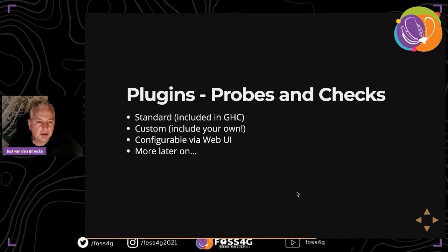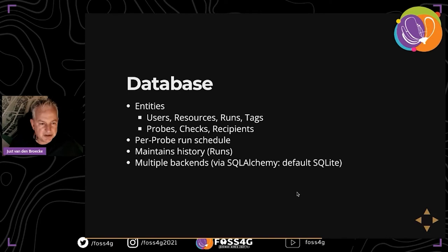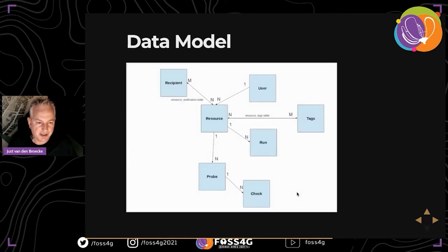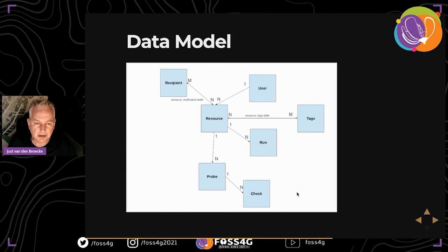There's quite a set of standards included as plugins, but you can write your own. The database stores the runs - a run is basically the result of a single probe run, forming a set of time series. You can also group resources and attach tags; when you have hundreds of resources it's handy to group them. In the model: the resource has multiple probes, each probe has one or more checks.